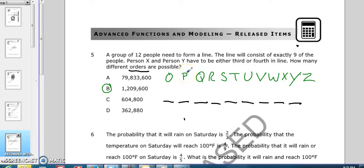North Carolina Advanced Functions and Modeling 2014 released test question number 5. A group of 12 people are forming a line. The line will consist of 9 out of the 12. Person X and Y have to be either 3rd and 4th in line. How many different orders are possible?